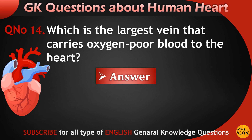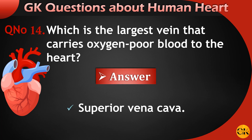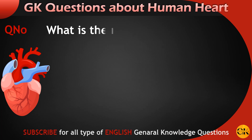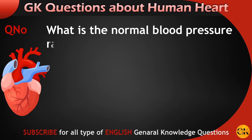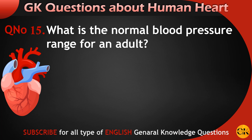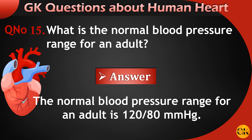Which is the largest vein that carries oxygen-poor blood to the heart? Superior vena cava. What is the normal blood pressure range for an adult? The normal blood pressure range for an adult is 120 by 80.